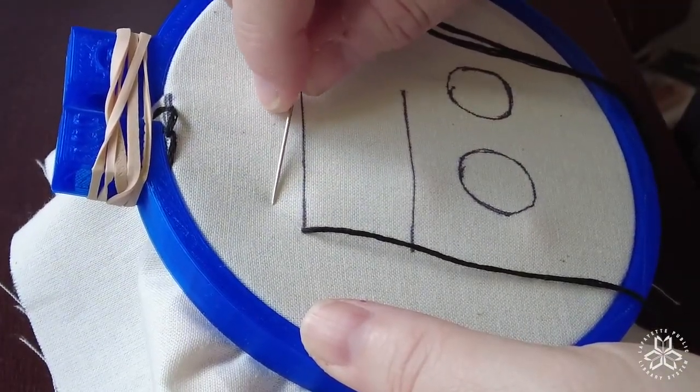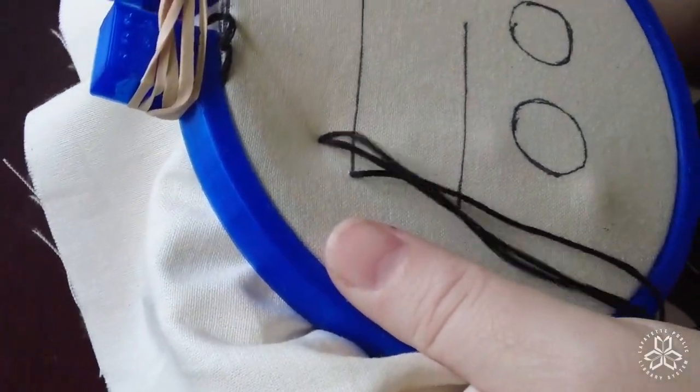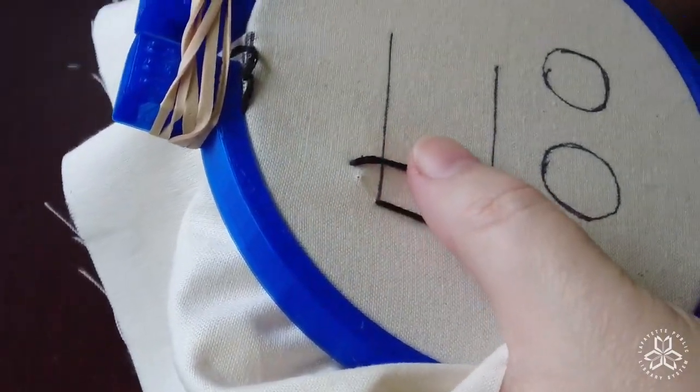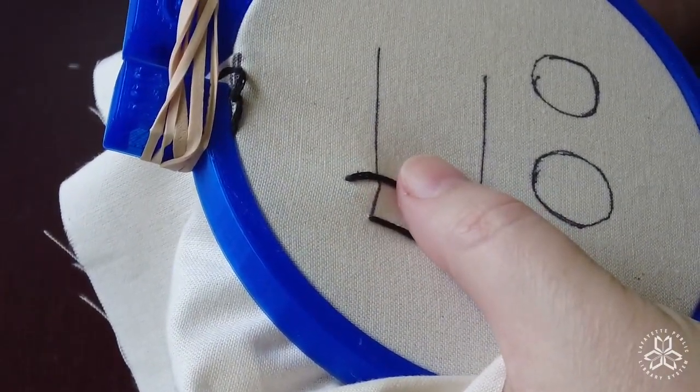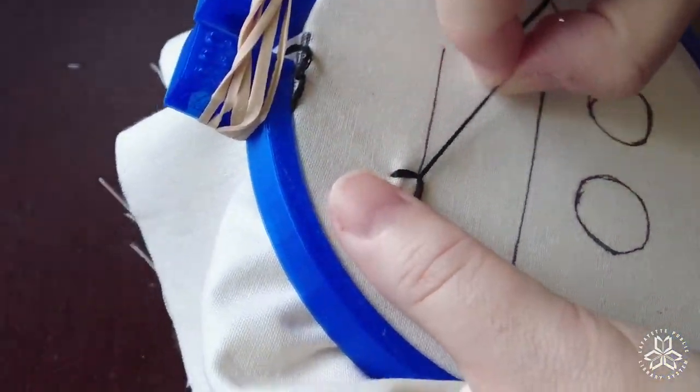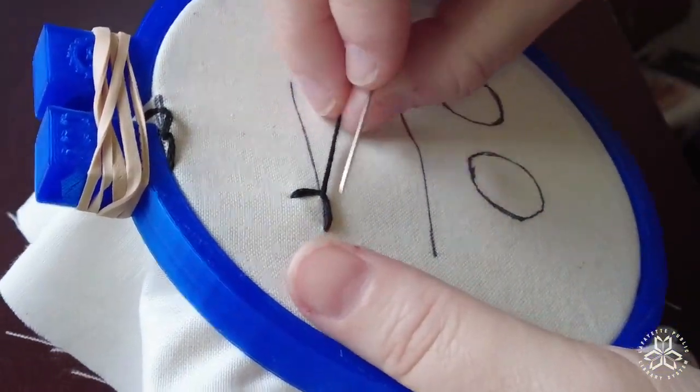So I came up from the back, count one stitch length over, go up, put my needle through, form my loop, come back in at a point on the line directly below the top point and create my little backward L. Try not to pull it too tight otherwise the fabric puckers.